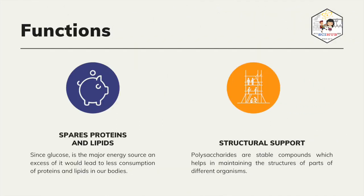Spares proteins and lipids: when there is a lack of glucose, our bodies resort to breaking down proteins and lipids to produce glucose. This is why some people practice eating less sugar or carbohydrates as part of their diet, such that their bodies break down fats first rather than relying on glucose. By having a sufficient amount of glucose in our system, we spare proteins and lipids from being used. Structural support: chitin and cellulose play vital roles in the structure and overall function of different organisms. Without these carbohydrates, these organisms would become more vulnerable and have less integrity and form.